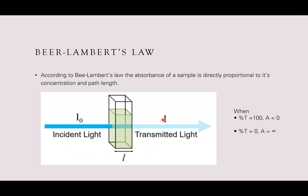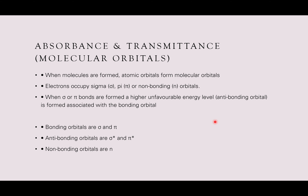According to Beer-Lambert's law, the absorbance of a sample is directly proportional to its concentration and path length. If we have incident light passing through a cuvette of distance L with some transmitted light coming out, molecules present at that wavelength will absorb the light. For example, if aldehydes are present and we set the lambda max for aldehydes, when we shoot that light through, aldehydes absorb some of it, and any light not absorbed is transmitted. Higher concentration means less transmitted light.